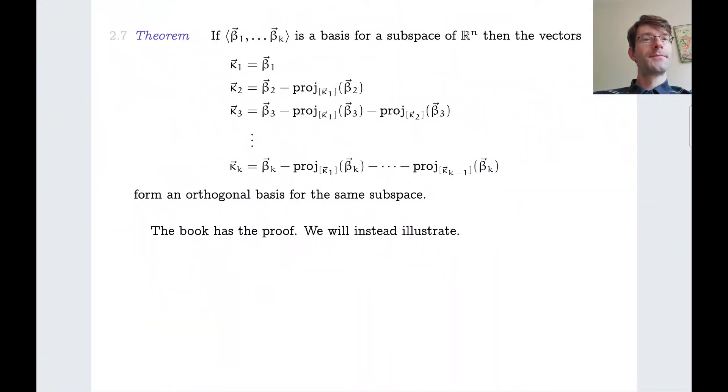And the theorem here tells you what the Gram-Schmidt process is. So we have some basis for some subspace of Rn, and the basis is given by these vectors beta i up to beta k, not necessarily orthogonal. Then you have this kind of computational process, which defines kappa 1, kappa 2, kappa 3, up to kappa k. And these kappa i vectors, they are mutually orthogonal, and then they form an orthogonal basis for the same subspace of Rn. Let me illustrate the first three steps of this process. Well, the first step is simple. We simply take as kappa 1 the same vector beta 1. So kappa 1 and beta 1 are equal.